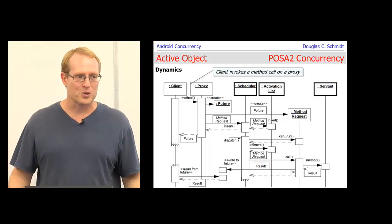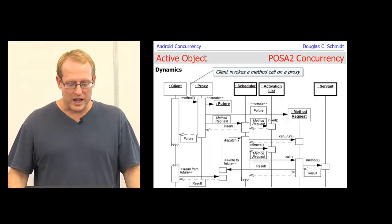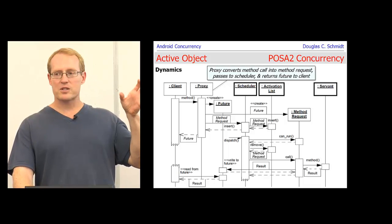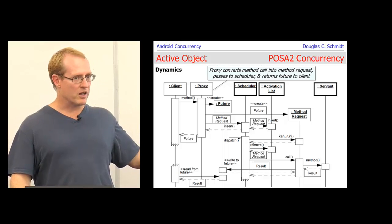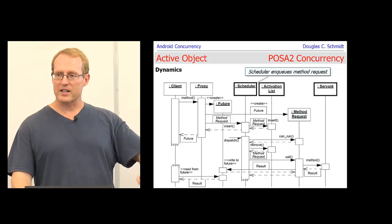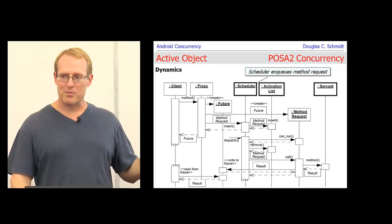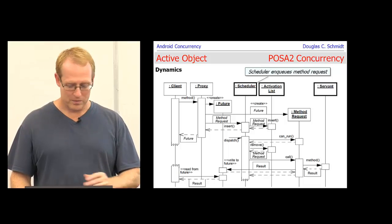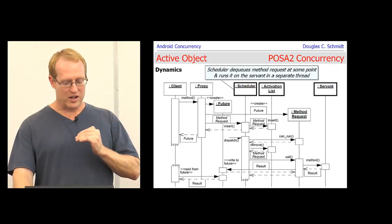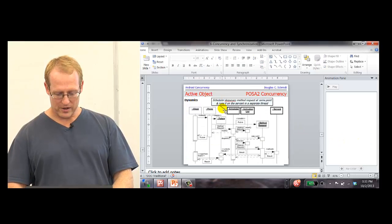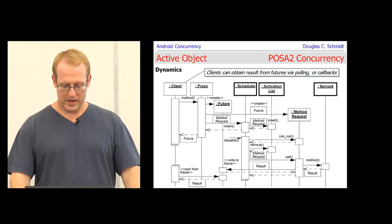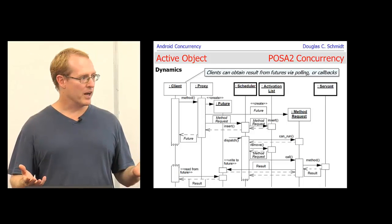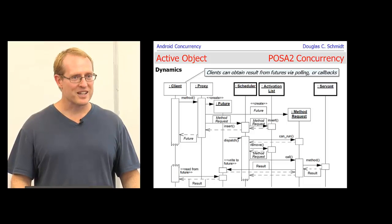There's also a dynamic view. The client invokes a method call on a proxy, the proxy converts the method call into a method request or message, passes it to the scheduler, and returns a future to the client. The scheduler sticks the method request onto an activation list or queue. At some point later, based on various properties, the scheduler takes the message off the queue and dispatches it on the servant. The servant does the work, and when done, the client gets the results either by polling or by some kind of callback.